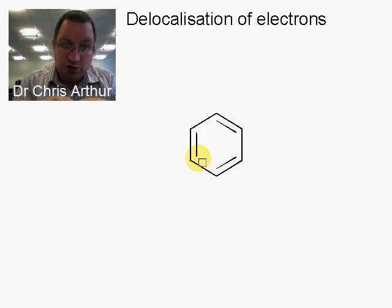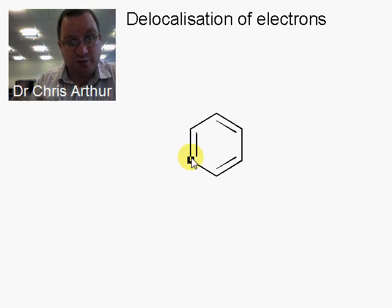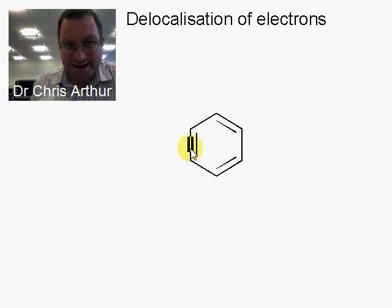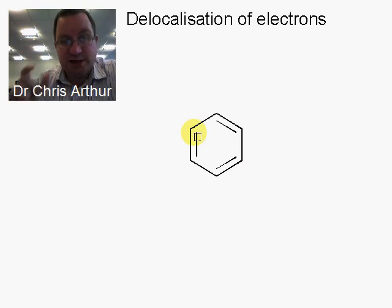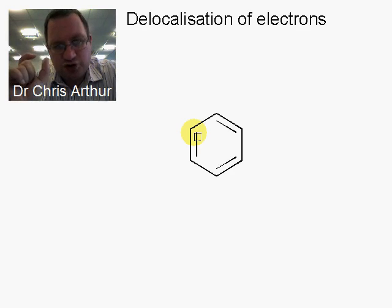Now, if I were to ask you what the bond lengths in this were, after thinking about it for a minute you'd probably say: a double bond is stronger than a single bond, so the double bonds should be nice and short, whereas the single bonds will be a little bit longer. That's not the case though — all the bond lengths in this molecule are equivalent, they're all exactly the same, and that poses a bit of a problem, because so far you've only seen double bonds in fixed positions. Essentially, the electrons have been held in specific bonds and they don't move.